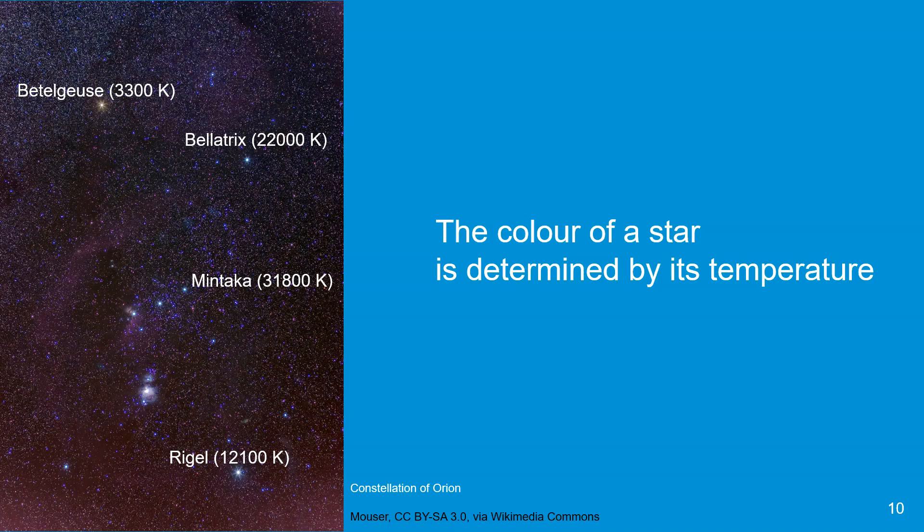With Wien's law, we can determine the temperature of objects by measuring their electromagnetic spectrum. In this example, we see the constellation of Orion and we can determine the temperature of its stars by measuring the electromagnetic spectrum.